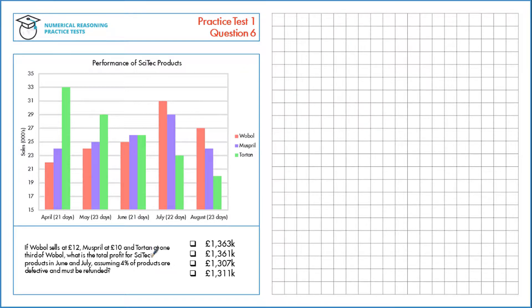First let's find out the selling price of Torton. It's 1/3 of Wobol, which we're told is £12, so that's 1/3 of £12, which is 1/3 multiplied by £12, which is £4.